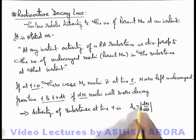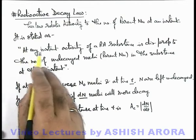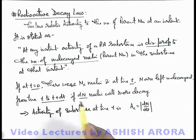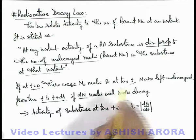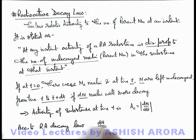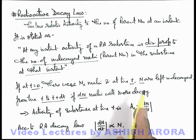And in this situation more precisely it should be written as minus dN by dt. Now, this activity according to the law: at any instant, activity of a radioactive substance is directly proportional to the number of undecayed nuclei at that instant. So here we can write, according to radioactive decay law, the value of this mod of dN by dt, the activity, must be directly proportional to the number of undecayed nuclei present, these are N.